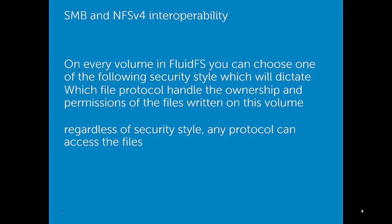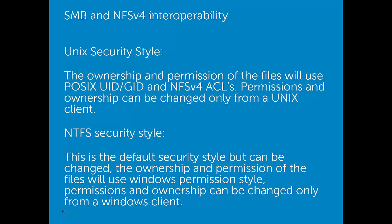SMB and NFS v4 interoperability. On every volume in FluidFS you can choose one of the following security styles, which will dictate which file protocol handles the ownership and permissions of files written to that volume. Regardless of the security style, any protocol can access the files. Unix security style: ownership and permissions use POSIX UID and GID and NFS v4 ACLs; permissions and ownership can be changed only from a Unix client. NTFS security style: this is the default and can be changed; ownership and permissions use Windows permissions and can be changed only from a Windows client.